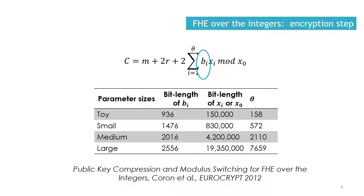The table on the slide lists the parameter sizes. Note that up to a million-bit multiplication is required. Also note that the B_i parameter can be represented as a low Hamming weight parameter.